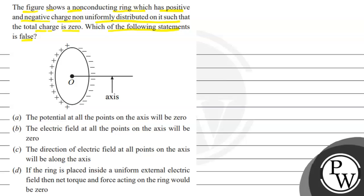Which of the following statement is false? A: The potential at all the points on the axis will be zero. B: The electric field at all the points on the axis will be zero. C: The direction of electric field at all points on the axis will be along the axis. D: If the ring is placed inside a uniform external electric field then net torque and force acting on the ring would be zero.